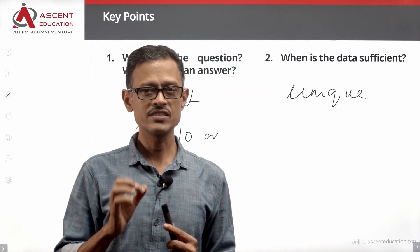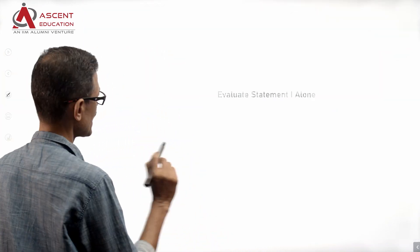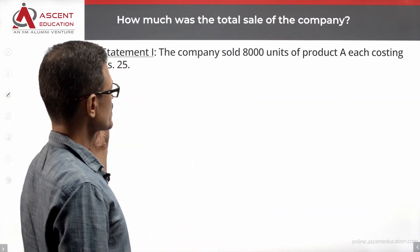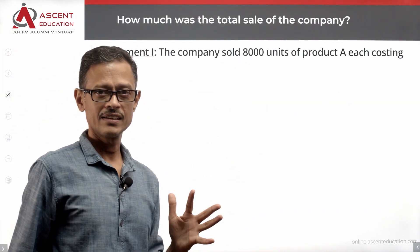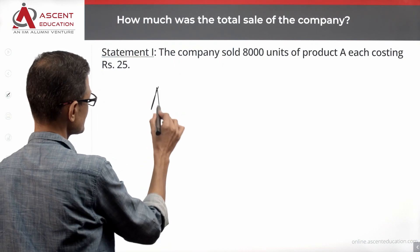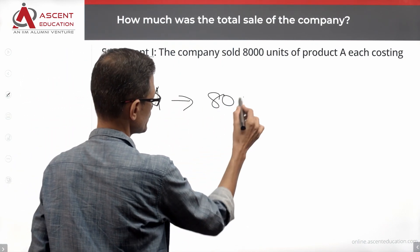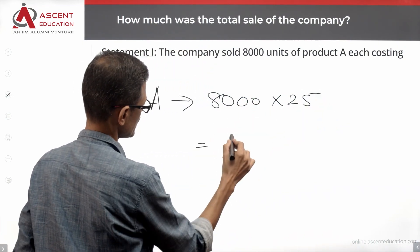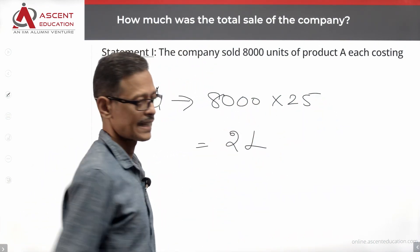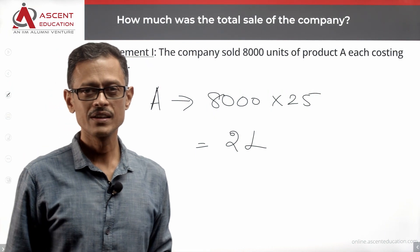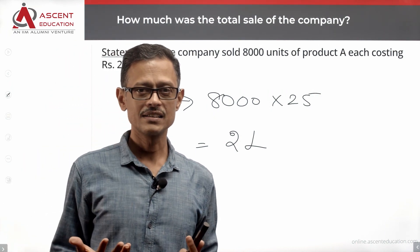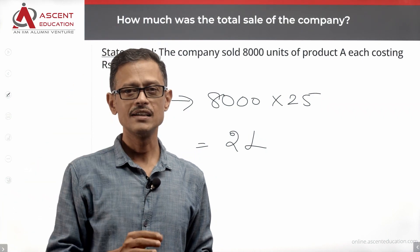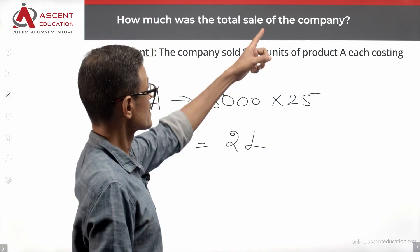The next step is evaluating statement one alone. The company sold 8,000 units of product A, each costing 25. So, product A sales — we know the sales from product A. However, we do not know what the total sales of the company are.